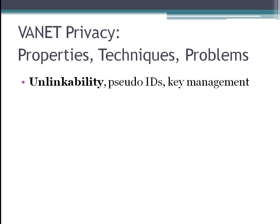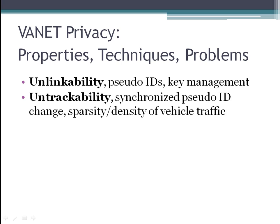Certificate revocation is also an issue. The second major property of VANET privacy is untrackability. People don't want their cars to be trackable or stalked in any way — if somebody hacks a location-based service, or a location-based service user or administrator is able to track your car, some people don't want that to happen.